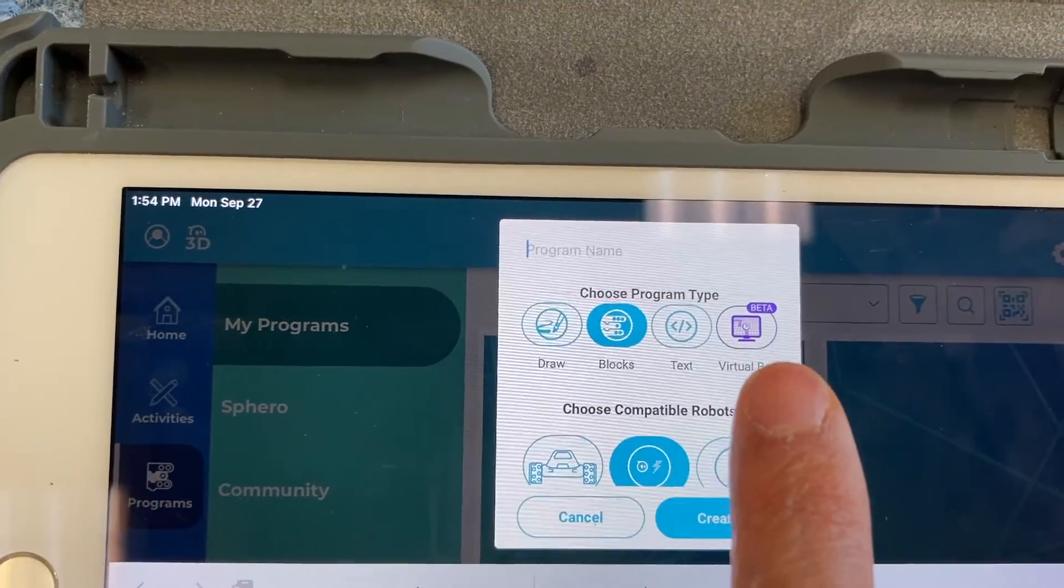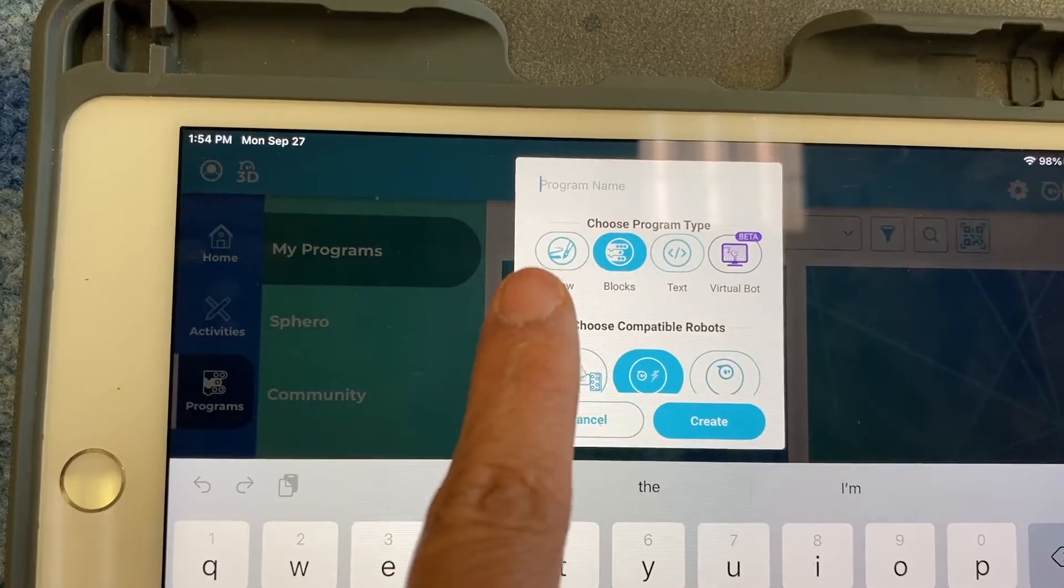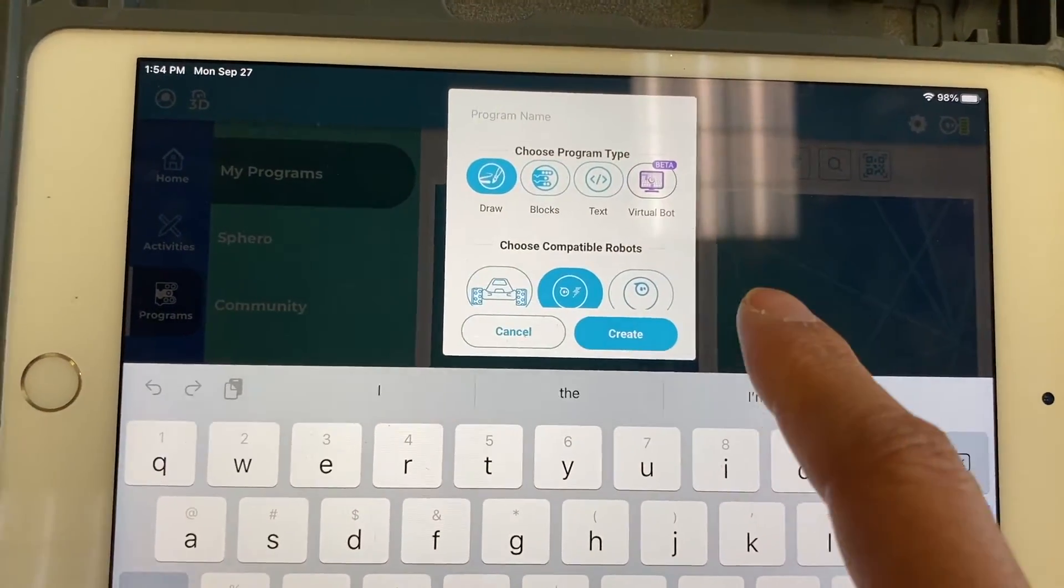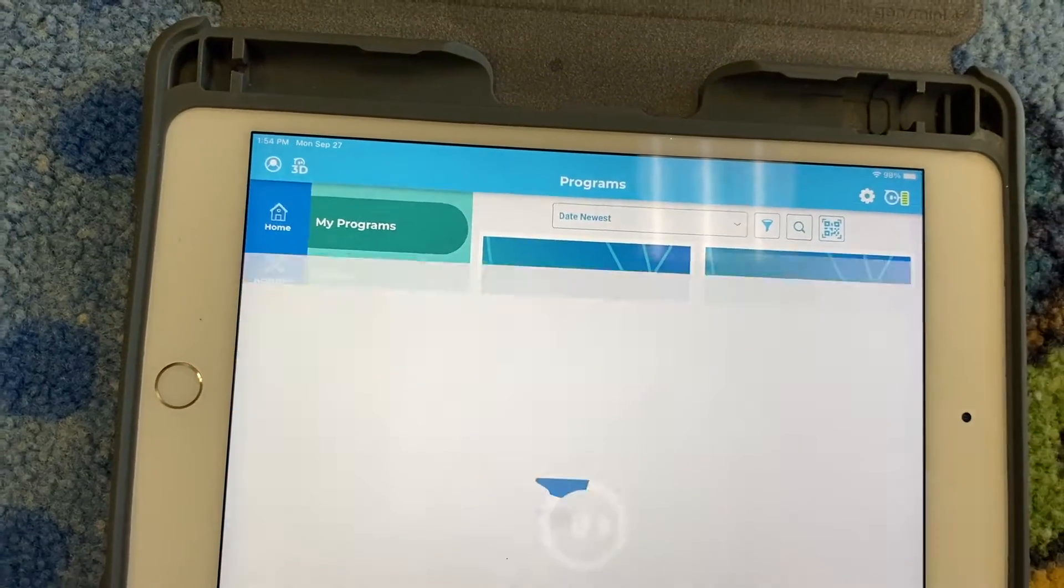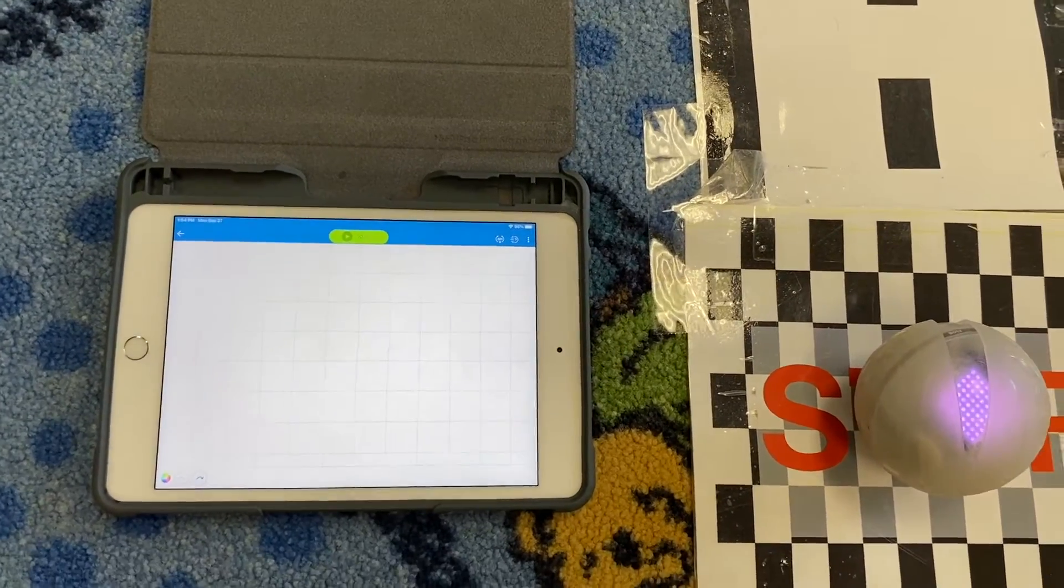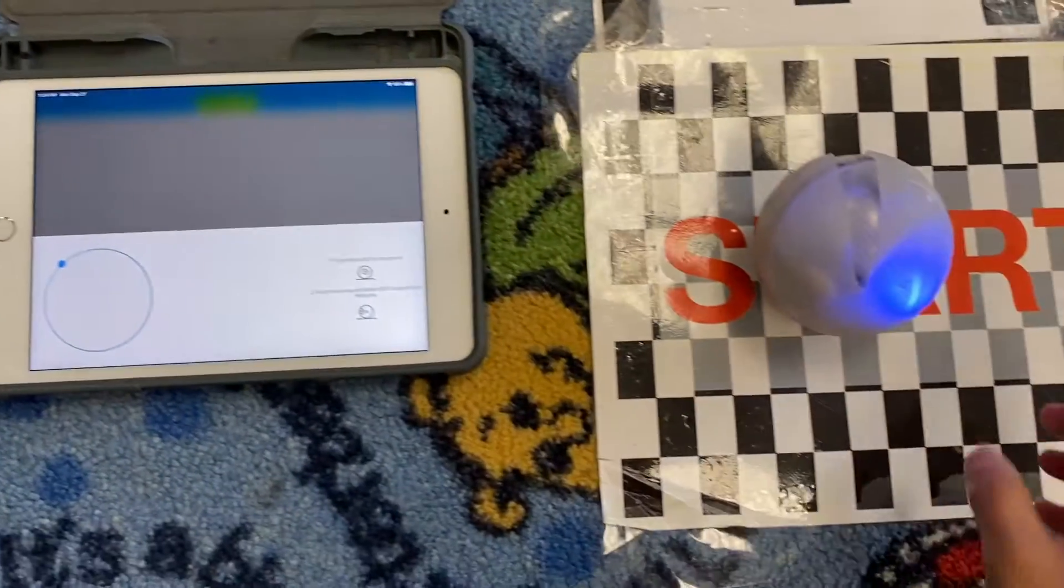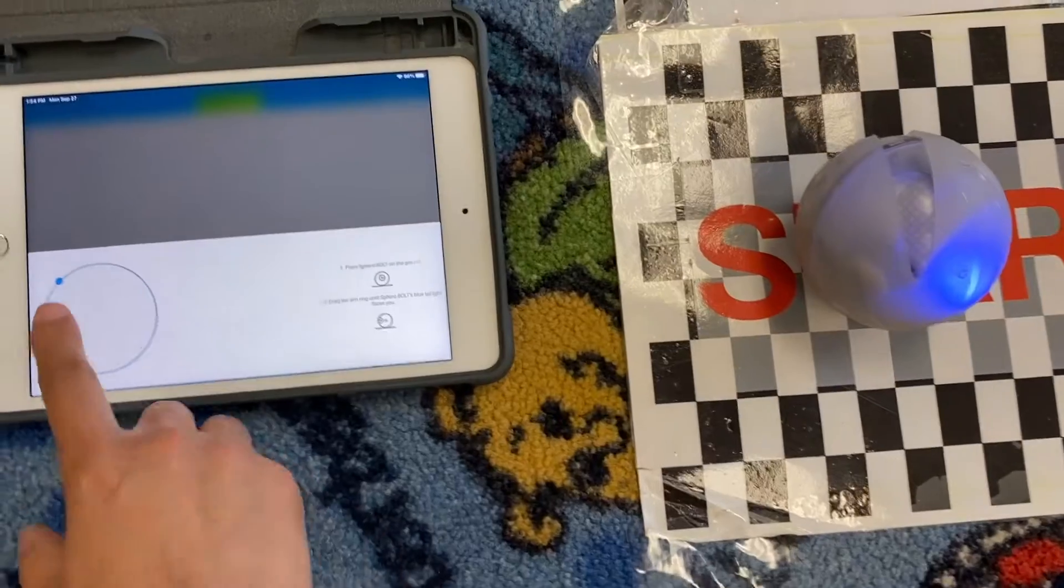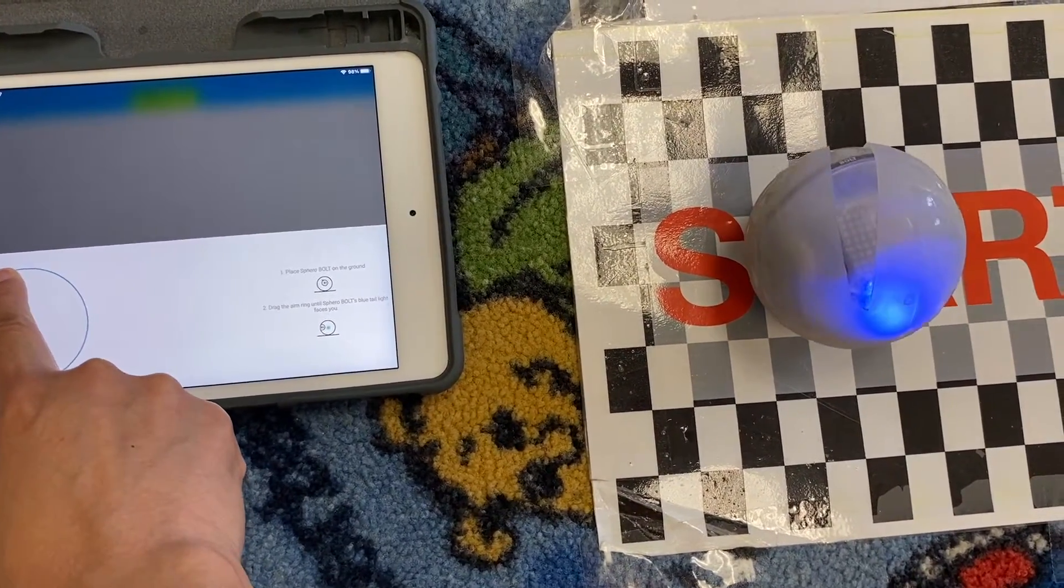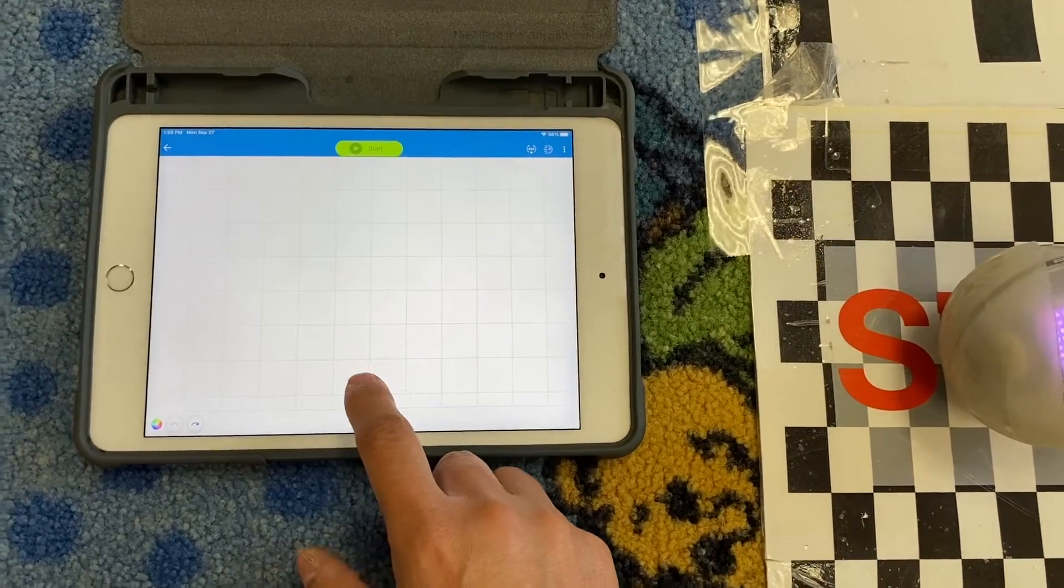To show you the draw coding, go ahead and click on the Draw, then click on Create. The first thing that I want to do is I want to make sure that my robot is aimed. So I'm going to click here on aim and see that light, it needs to be pointing to me. So I'm going to make sure that it's pointing right about here, okay, where it starts.